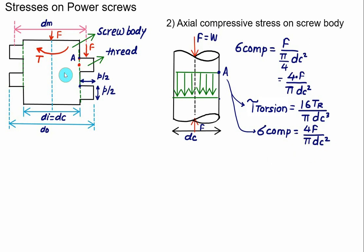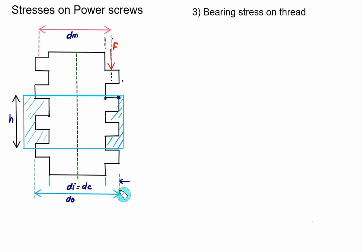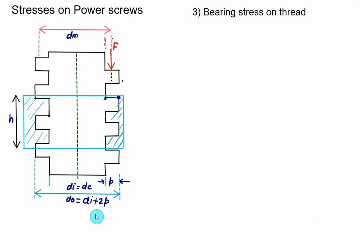Now we calculate the bearing stress on the thread. Consider a screw and nut arrangement where h is the height of the nut, n is the number of engaged threads, p is the pitch, DO is the outer diameter, Di = DC is the core diameter, and DM is the mean diameter. The height of the thread equals p/2, so DO = Di + p (since p/2 + p/2 = p). The force acts at the mean diameter DM, at a distance of p/4 from the core diameter.